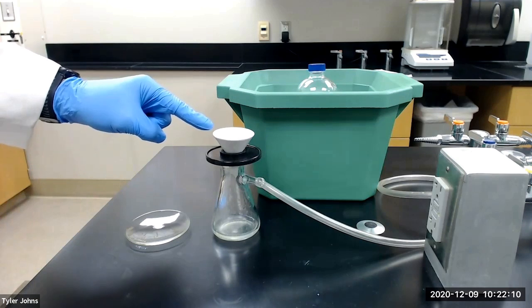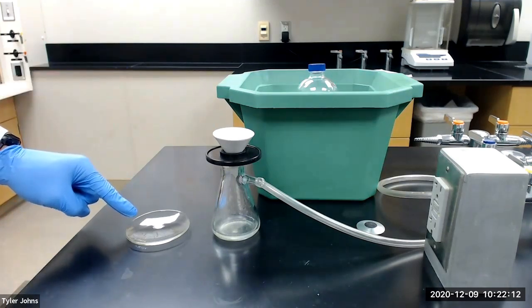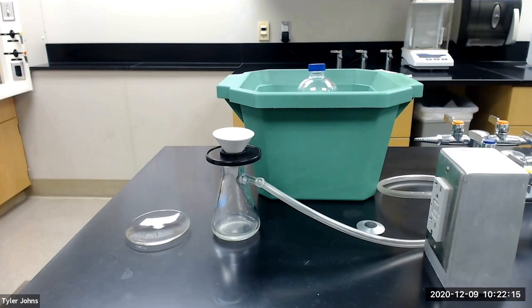We will next transfer the crude benzoin to the pre-weighed watch glass and then dry for several minutes in an 80 degrees Celsius oven.